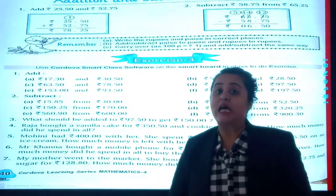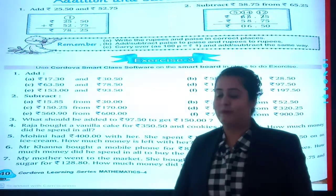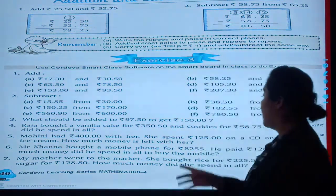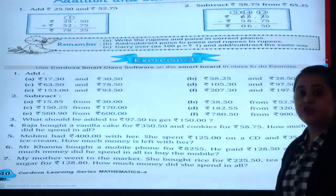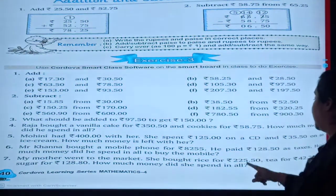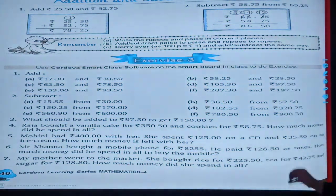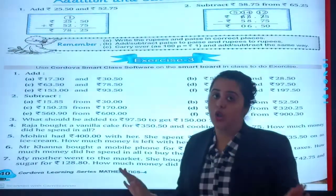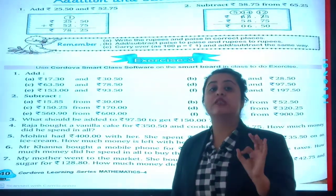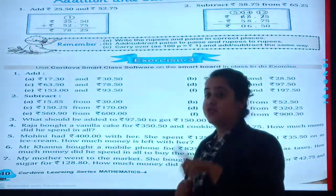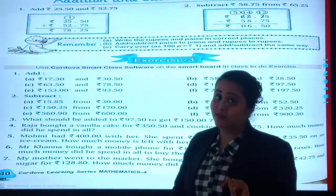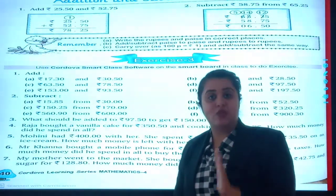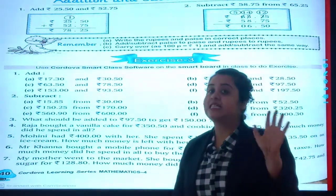Question number six. Mr. Khanna bought some mobile phone for rupees 82,255. He paid rupees 128.50 as tax. How much money did he spend in all? 'In all' means you will add up the amount. But remember, decimal below decimal. Don't change their places. Ones will be coming at its ones place, tens at its own place.